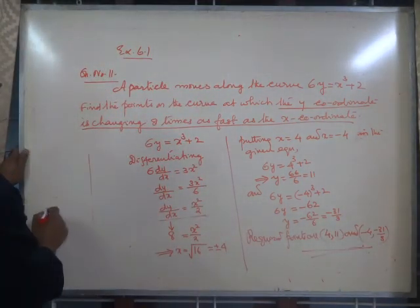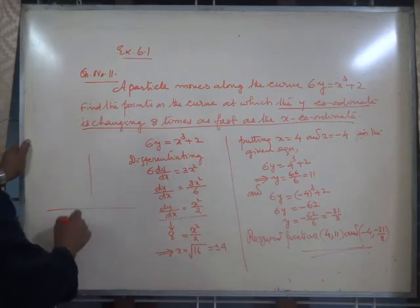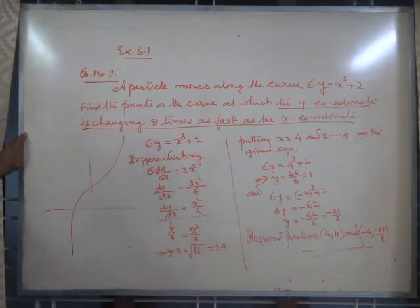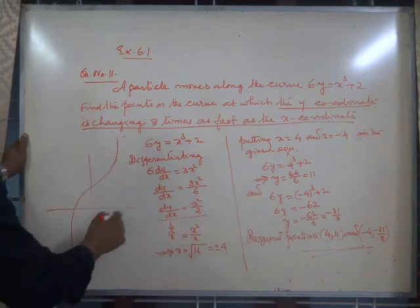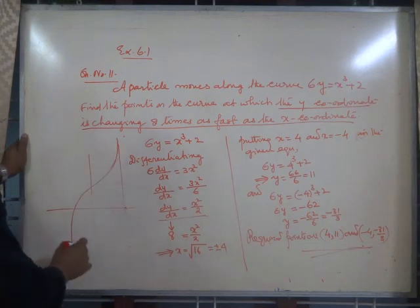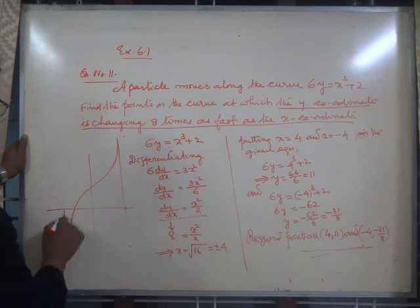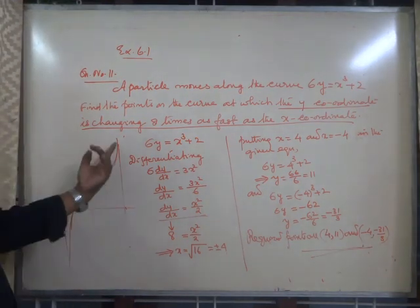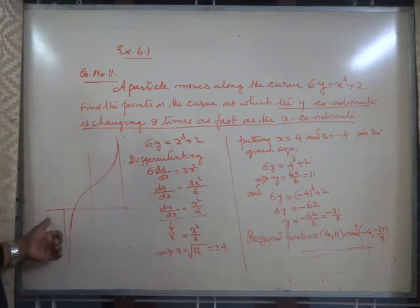The curve goes in this shape, and on both sides you get points on the curve — for x = 4 and x = −4 — giving us two points where the y-coordinate changes 8 times as fast as the x-coordinate.